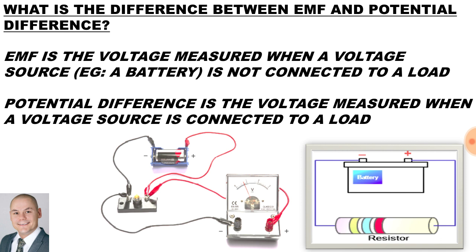What is the main difference between EMF and potential difference? EMF is measured of a car battery when no load is connected to the battery. However, when we measure potential difference, a load is connected. If we look at this circuit diagram, we can see a voltmeter is measuring the potential difference across the lamp.